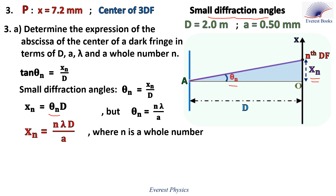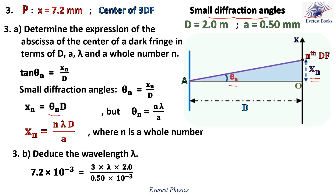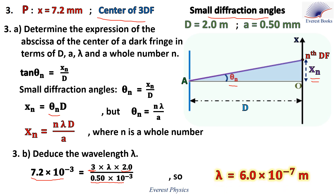N is a whole number. Now using this expression to calculate the wavelength: replace xN by 7.2 × 10⁻³ meters, D by 2 meters, A by 0.5 × 10⁻³ meters, and N by 3 since P is the center of the third dark fringe. Therefore, the wavelength of the incident radiation is 6 × 10⁻⁷ meters.